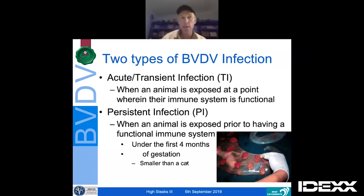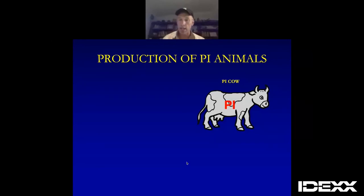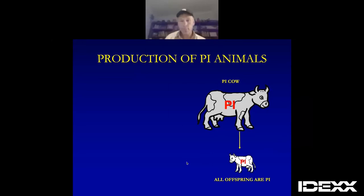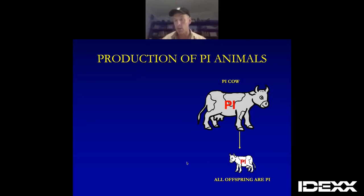How are PIs produced? Well, it's pretty straightforward. If you've got a PI cow or heifer that lives long enough to get pregnant, PI cows will always deliver a PI calf — always, 100%. There's a lot of confusion; some people think this is the only way PIs are produced. In work done out of the US by Brock and colleagues around 1999, they did a big survey across a lot of southwest and southeast states — seven percent of PIs were born this way, and 93% came the other way.